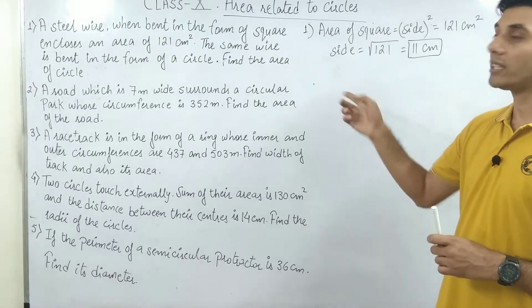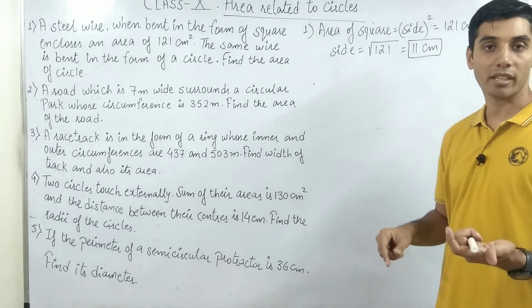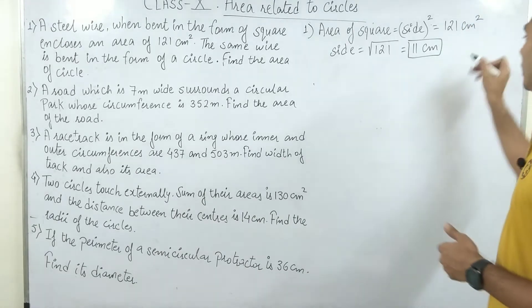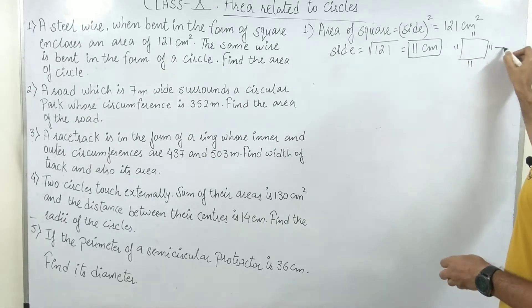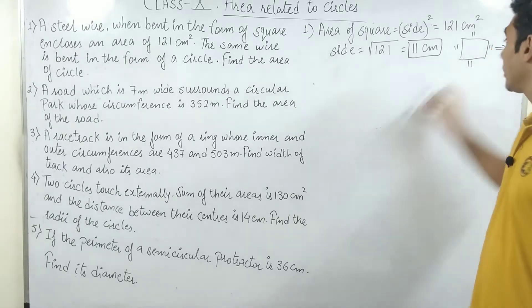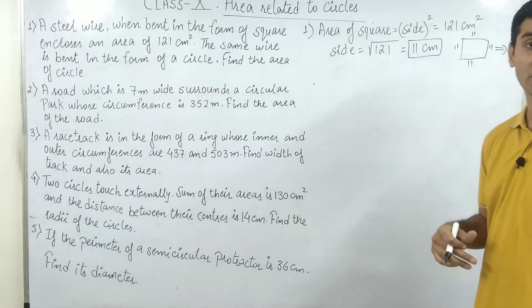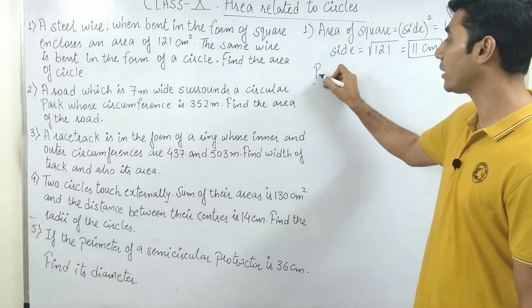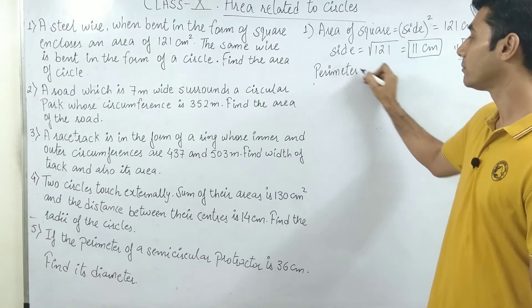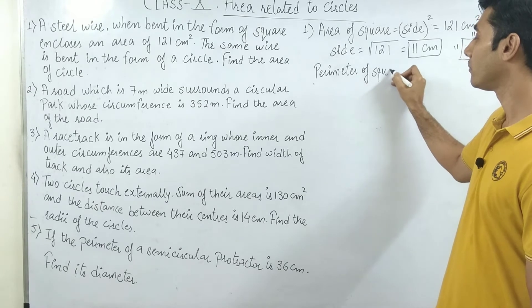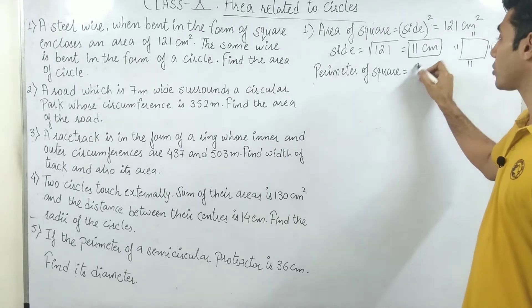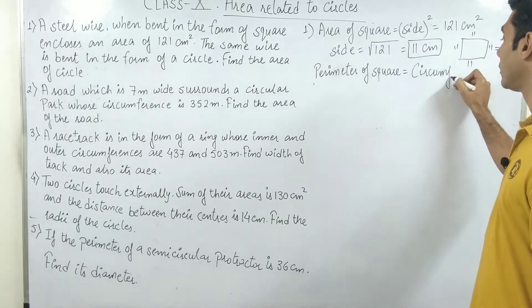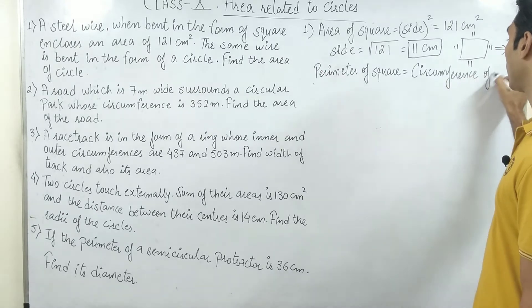The same wire is bent in the form of a circle. The square had sides 11, 11, 11, and 11, and now it is being converted to a circle. Whatever the length of this wire is, that will form the same circle. So the perimeter of the square should be equal to the circumference of the circle.